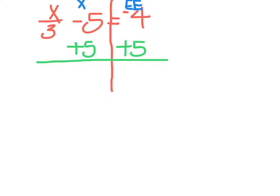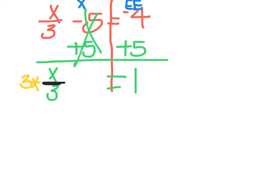So x divided by 3 is going to come down. When I have minus 5 plus 5 right here, a minus 5 and a plus 5 are going to cancel each other out — so that's gone. And then negative 4 plus 5 is going to give us 1. Think of it like money: you owe $4 and you have $5. Now I've got to get x by itself. Currently x and 3 are divided, so I need to do the opposite of division, which is multiplication. I'll multiply both sides by 3. I'll rewrite this as x over 3 equals 1.